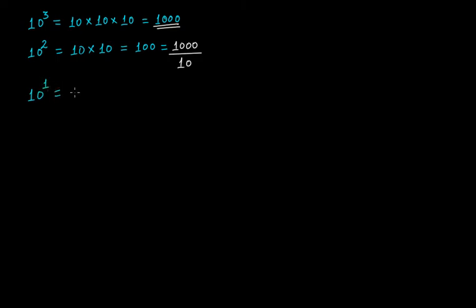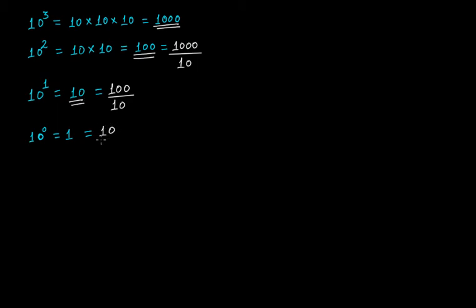10 raised to the power of 1 is equal to 10, and this 10 is actually equal to 100 divided by 10. Just keep observing this pattern. 10 raised to the power of 0 will be equal to 1, right? Because 10 divided by 10 gives you 1. So by observing the pattern, every time we divide by 10 to get the next power.